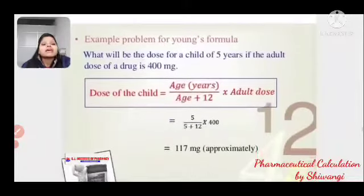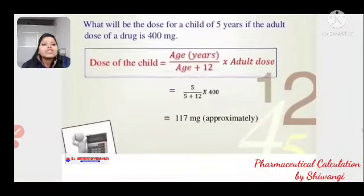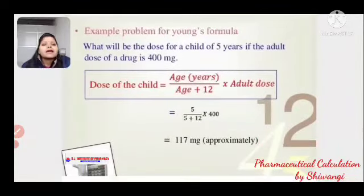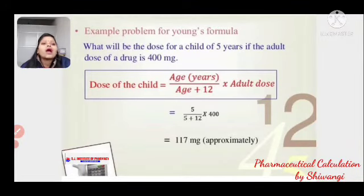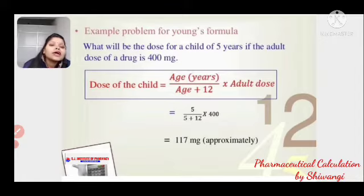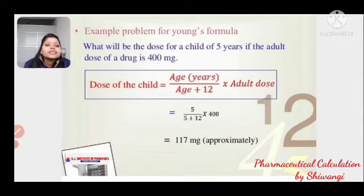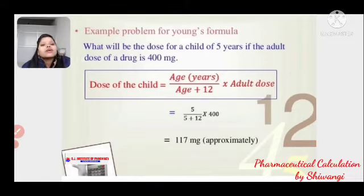Example using Young's formula: Child's age = 5 years, adult dose = 400 mg. Dose = 5 / (5 + 12) × 400 mg. Calculate accordingly.